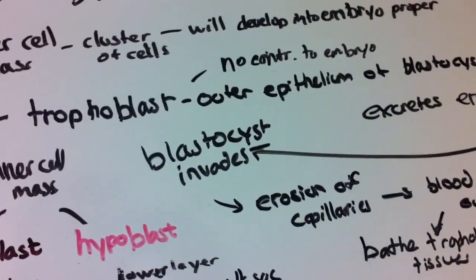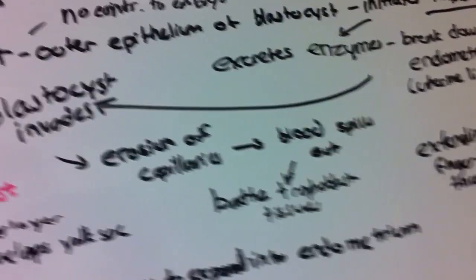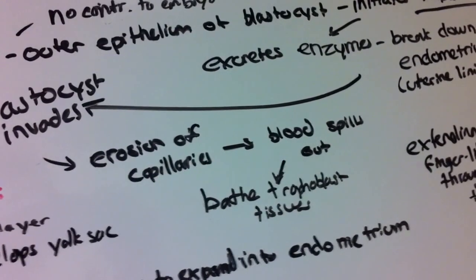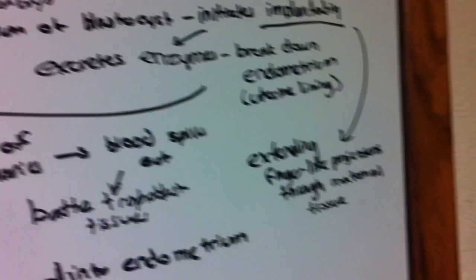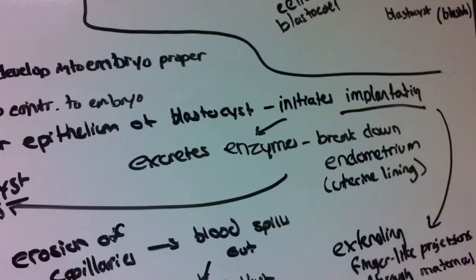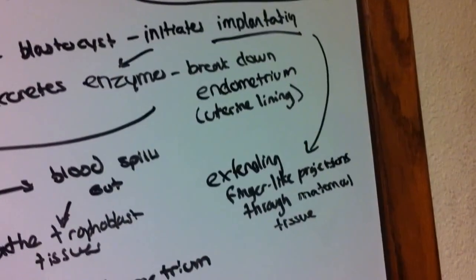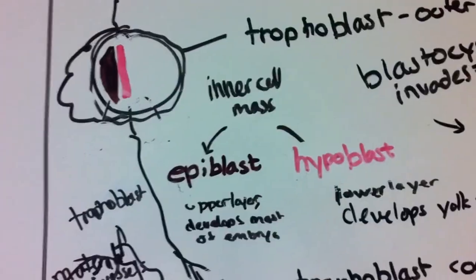As it breaks down this endometrium, the blastocyst invades. This causes the erosion of capillaries. Because of this erosion, blood will start to spill out and bathe the trophoblast tissues. As the blastocyst invades, the trophoblast extends these finger-like projections through the maternal tissue, which then latch onto maternal blood vessels.